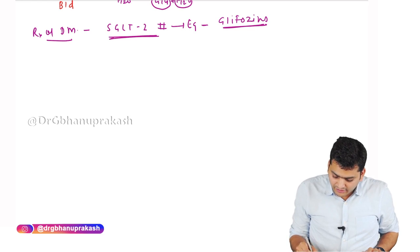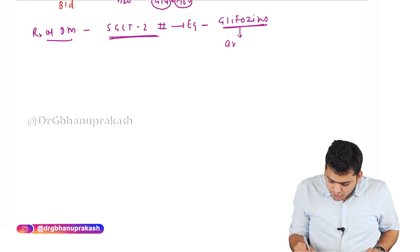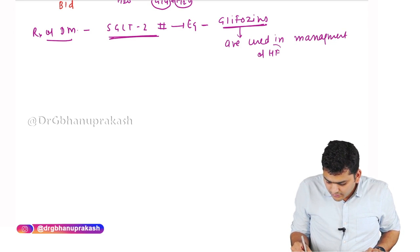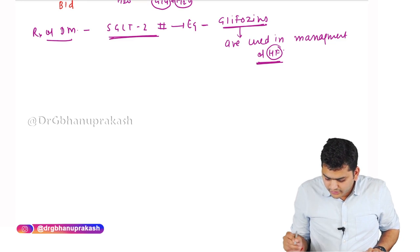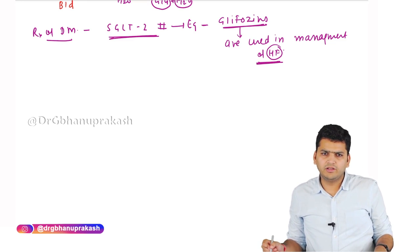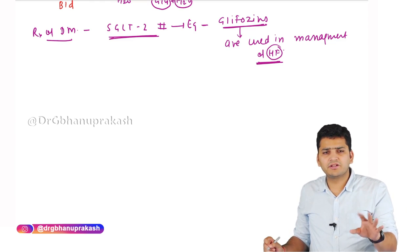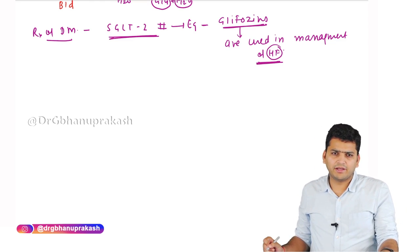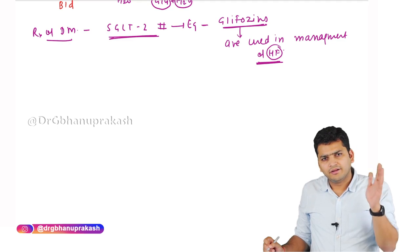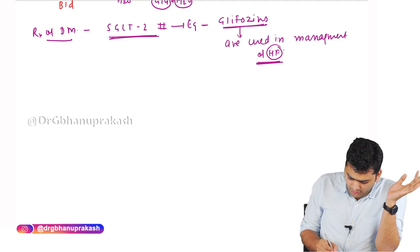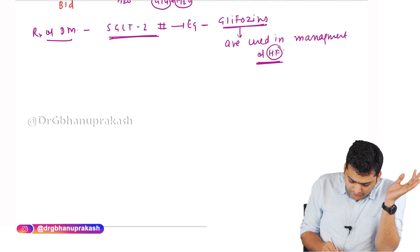Gliflozins are not only used in diabetes but also in the management of heart failure, because they lose water and decrease plasma volume, thereby decreasing preload. This is one of the recent advances in heart failure management — using an anti-diabetic drug even when the patient is not diabetic.